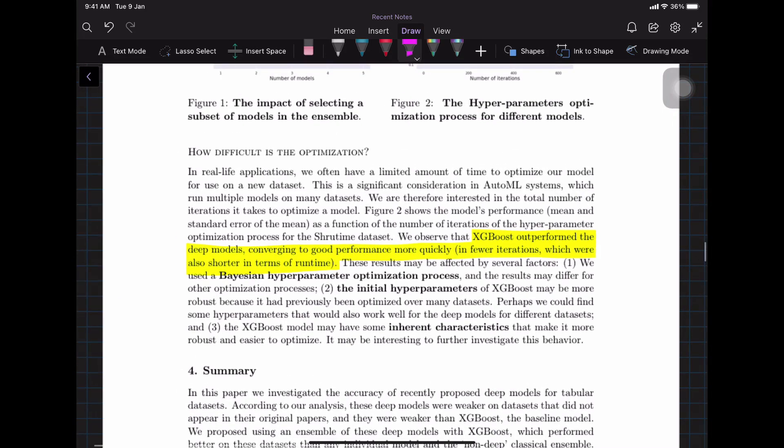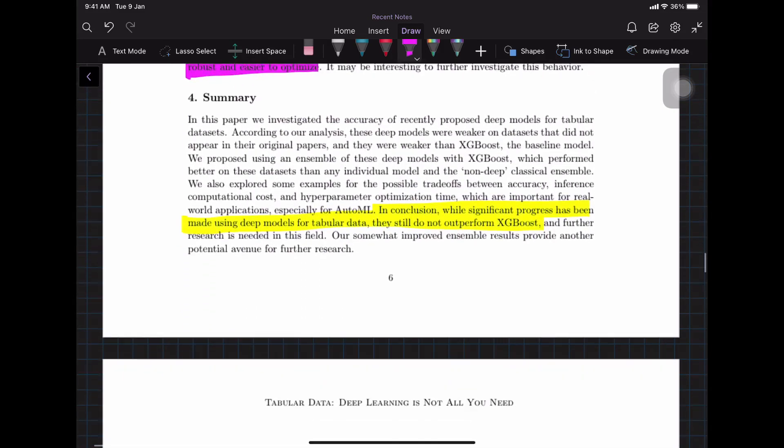One final information about computational optimization: XGBoost outperformed deep models and converged to good performance more quickly in fewer iterations, which means shorter runtime, which means shorter cost. They're assuming it is probably due to a bunch of factors, but one of the things they're saying is maybe XGBoost model has got some inherent characteristics that makes it more robust and easier to optimize. That is a good area for research to investigate.